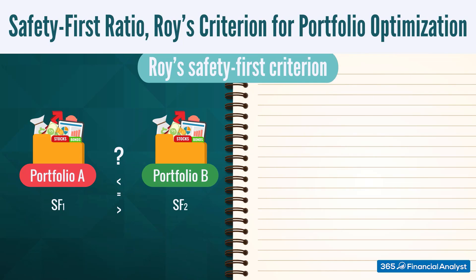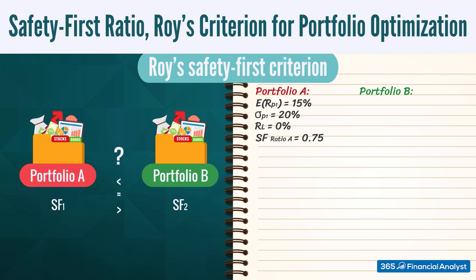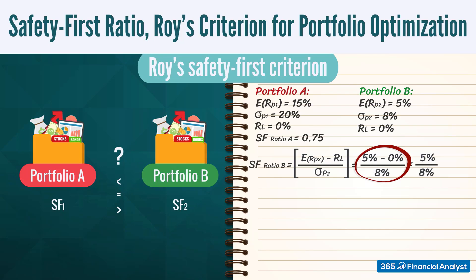Assume that you have to choose between the portfolio we already considered and a second portfolio that has a historical average return of 5% and a standard deviation of 8%. We'll have 5% minus 0% divided by 8%. The safety ratio of the second portfolio is 0.62, which is lower than 0.75 for the first portfolio. Therefore, the first portfolio is preferable according to Roy's safety first criterion.